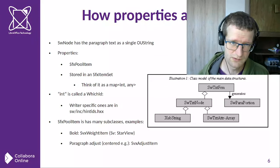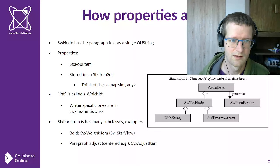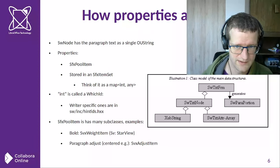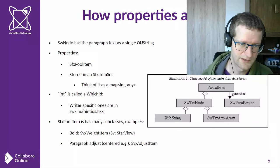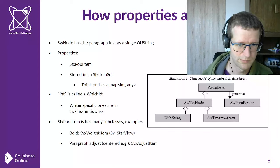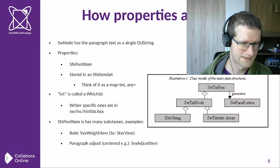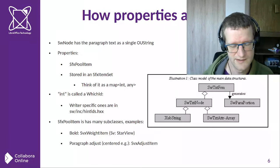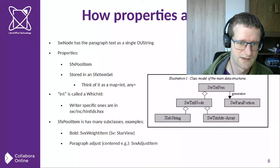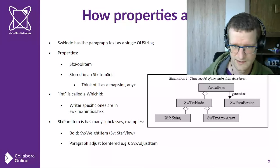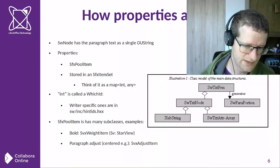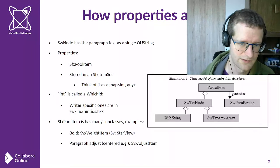One question is how properties are stored inside the text node. The SwTextNode has the paragraph text as a Unicode string, and then each and every property on that paragraph is stored as a pool item. The pool item is something that can store a string, a number, a boolean, or something similar. It's stored in an ItemSet, which is a container for these pool items — it's kind of a map which has integer keys and can have basically any value. This key is called the Which ID, and for Writer there is a specific C++ header which contains all of these IDs.